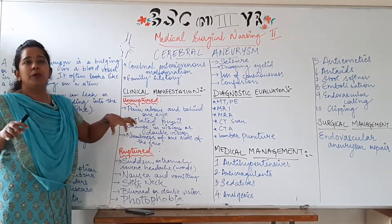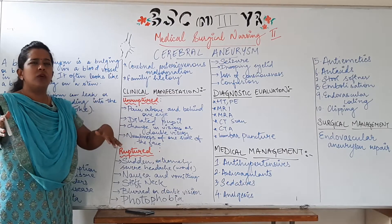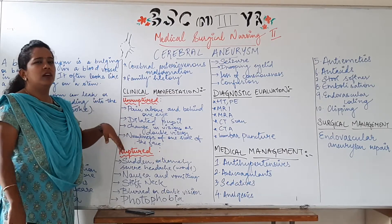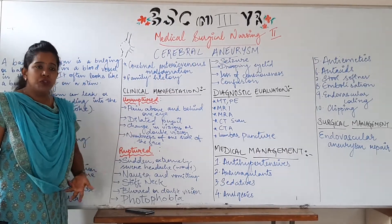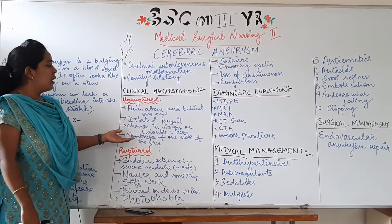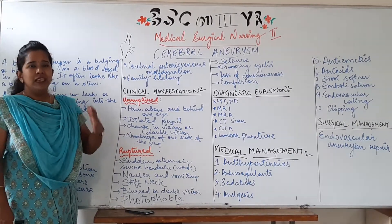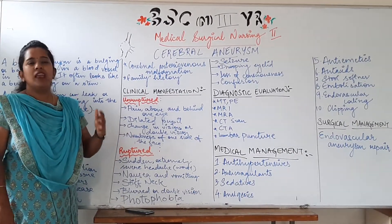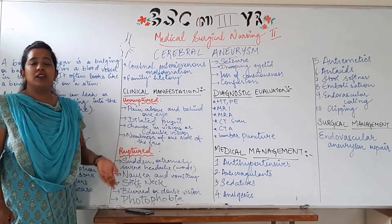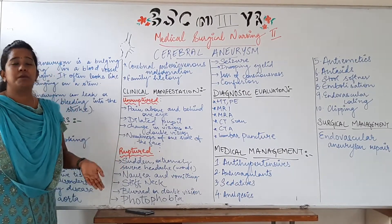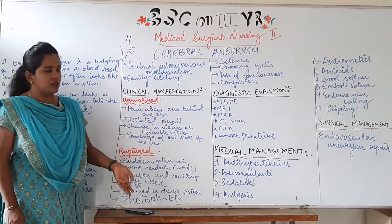Then there could be dilated pupil, which could also be unilateral, change in vision, double vision, or numbness of one side of the face. These are some symptoms that patients with unruptured aneurysm exhibit.